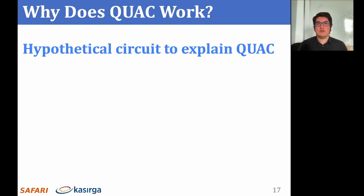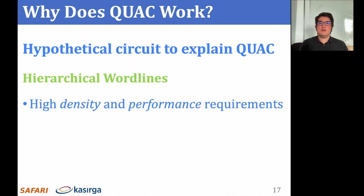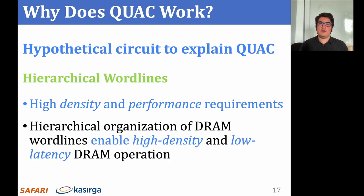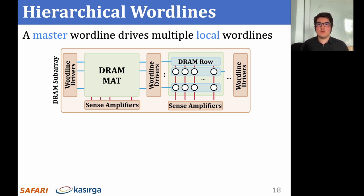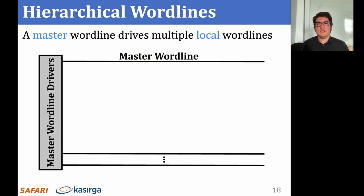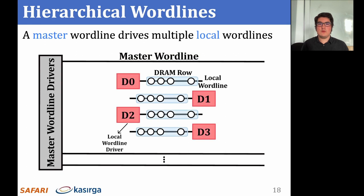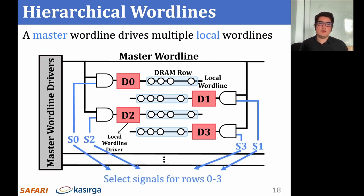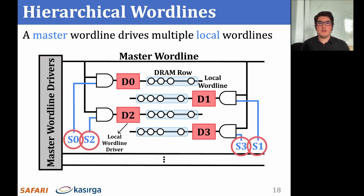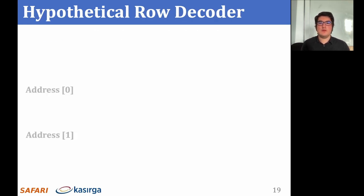To explain how QUAC might be supported in current DRAM devices, we develop a hypothesis based on the use of hierarchical wordline schemes. These schemes are adopted in current DRAM architectures that have high density and high performance requirements, as they enable high density and low latency DRAM operation. In the hierarchical wordline scheme, a master wordline potentially drives multiple local wordlines. The master wordline drivers attached to either sides of a DRAM mat drive the master wordlines. Local wordline drivers drive the local wordlines that enable the access transistors in DRAM cells. These local wordline drivers are enabled with a combination of the master wordline and certain control signals, denoted S0 through S3 in this diagram.